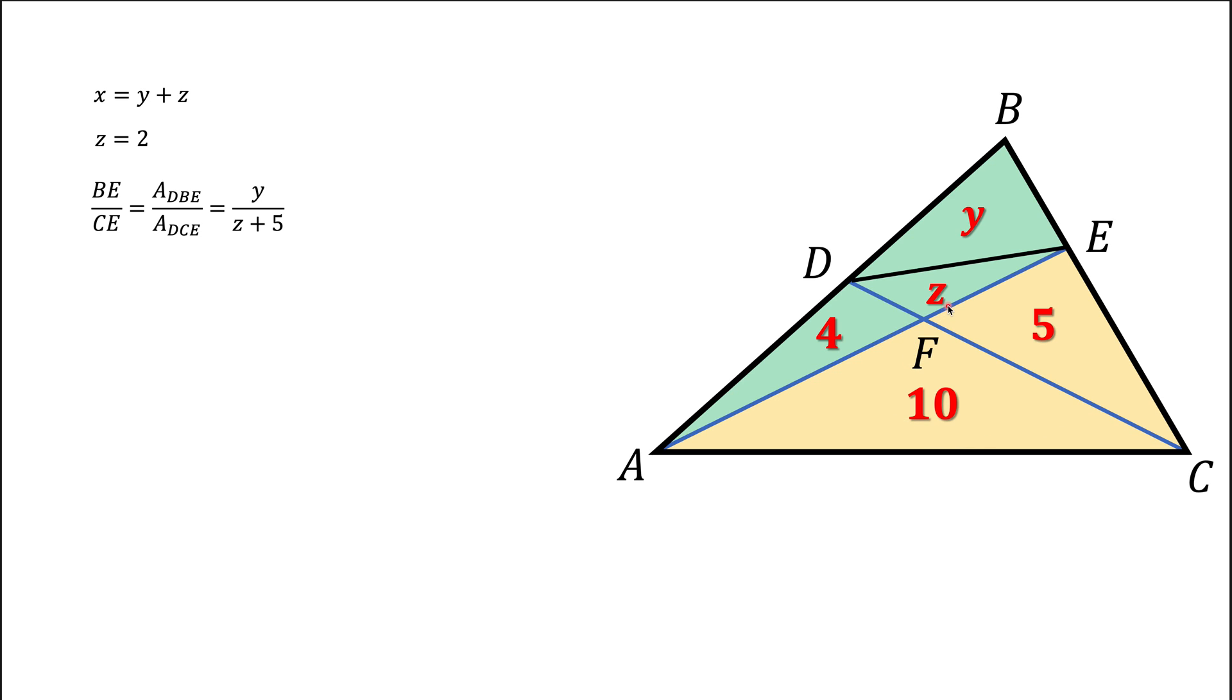So the area of the green triangle consists of areas of three triangles. So it's going to be 4 plus Z plus Y. The area of the yellow triangle will be 10 plus 5.